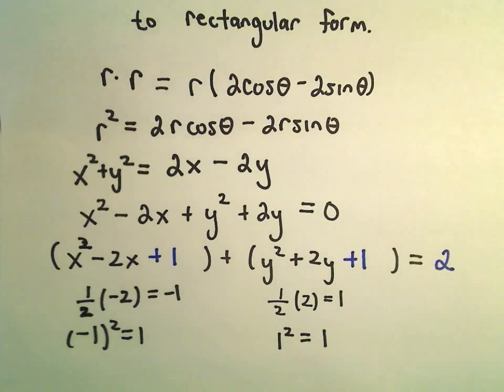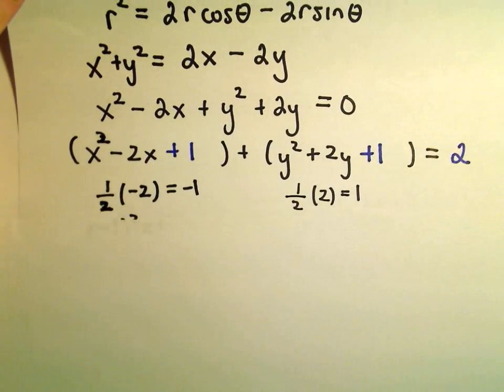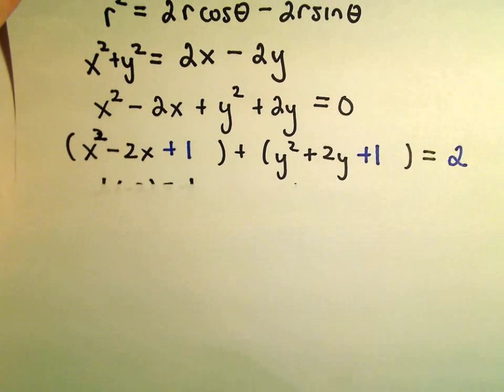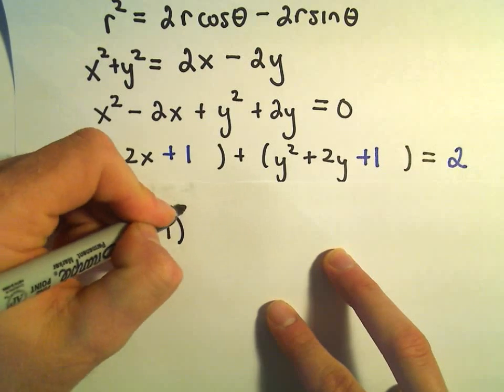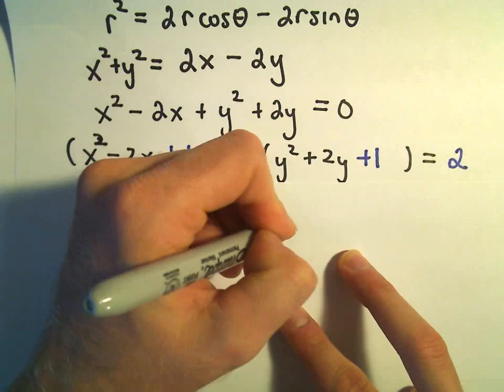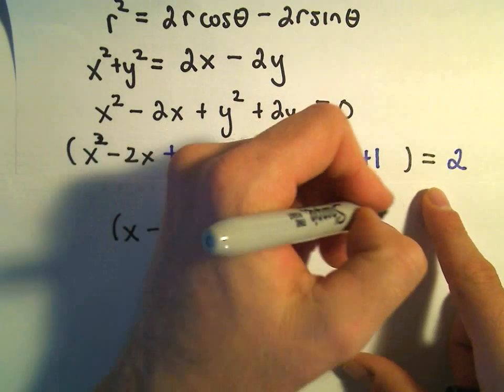And now we can write these as perfect squares. We would have x squared minus 2x plus 1. We can rewrite that simply as x minus 1 quantity squared plus, it looks like we'll have y plus 1 quantity squared equals 2.